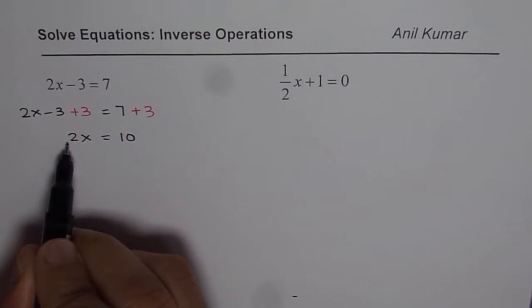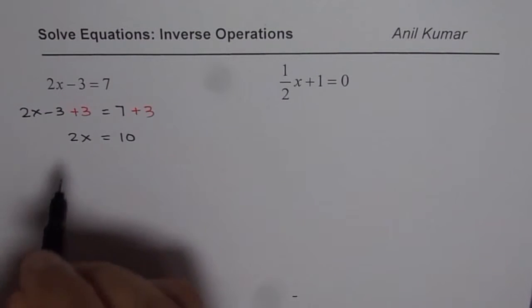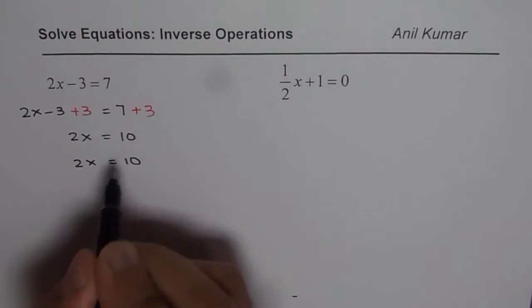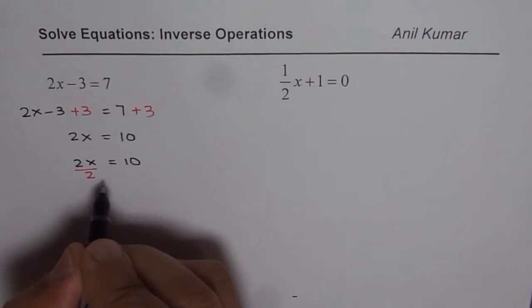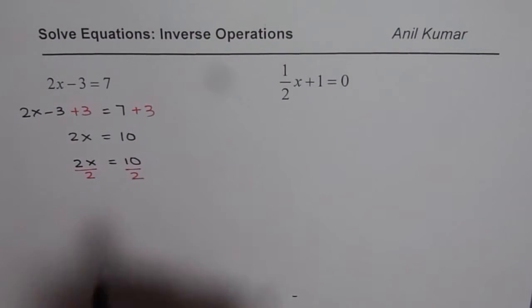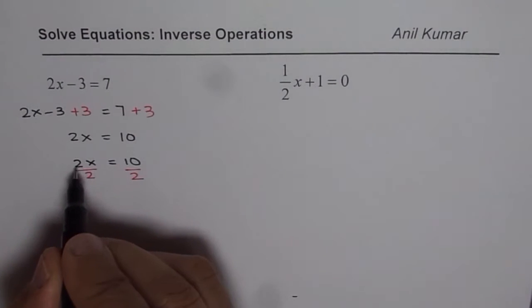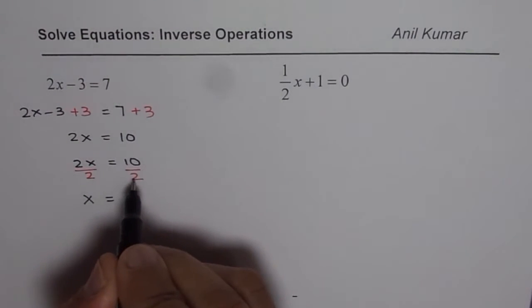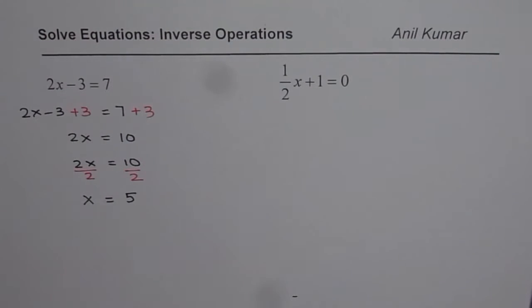We are multiplying it by 2. Inverse of multiplication is division. So in this step we will divide by 2 on both the sides. When you divide 2 by 2 you get 1 and that is 1 times x is x. So you get x equals 10 divided by 2 which is 5. So that is how you solve for an equation.